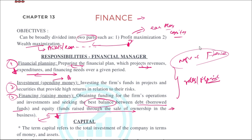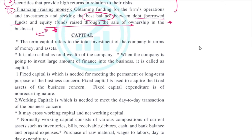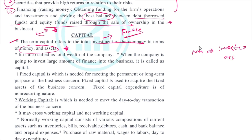Financial management is all about handling capital. Capital basically refers to the total investment of the company in terms of money and assets. In short, capital is the total wealth of the company — which can include assets, infrastructure, money in hand, sales, bonds, mutual funds, and many other things. When a company invests a large amount of finance into the business, it is called capital.